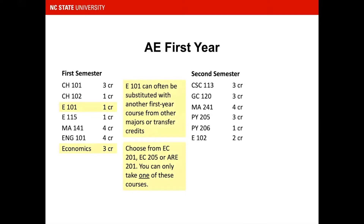Incoming first-year students are normally placed in either English 101 or an Economics course in the first semester and instructed to take the other course — English 101 or Economics — in the second semester. It is important to keep in mind that English 101 is required for CODA, but Economics is not.